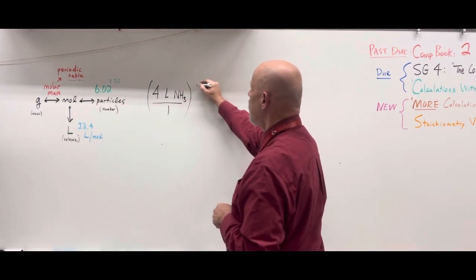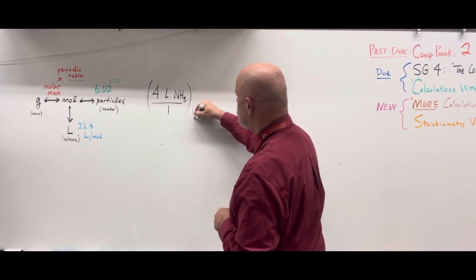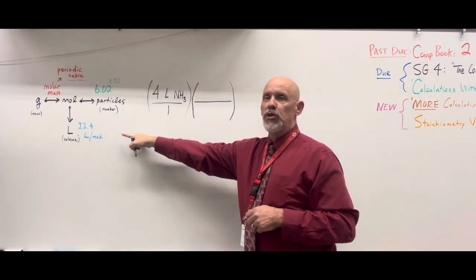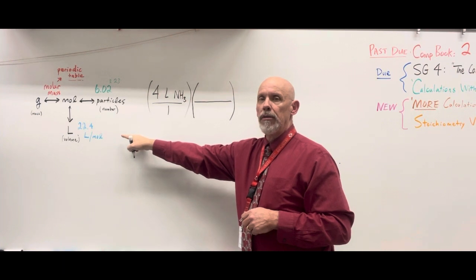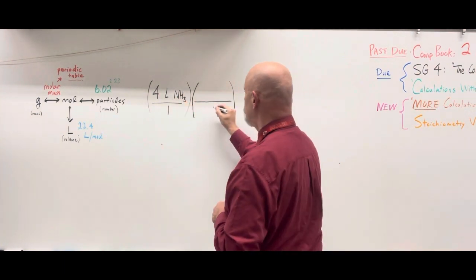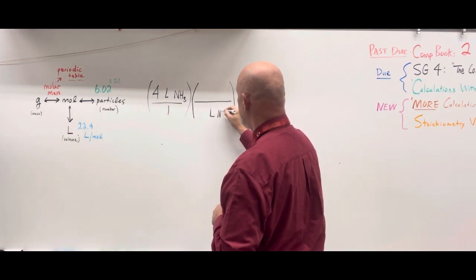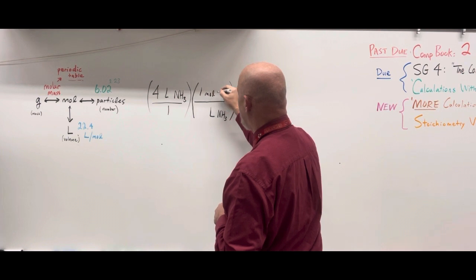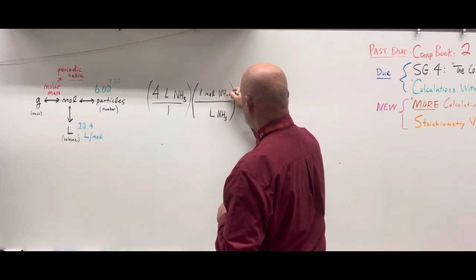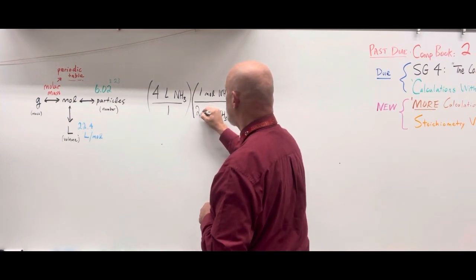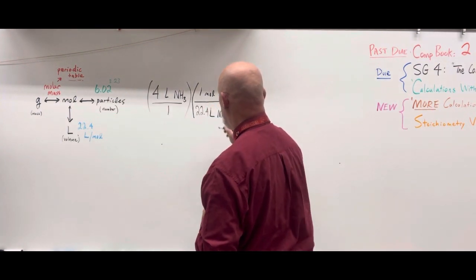If we're talking about a gas at standard temperature and pressure, STP, then that gas will occupy 22.4 liters per mole. Since we have liters of ammonia at the top of the first expression, we're going to end up canceling that. That's going to go on the bottom here and we'll put one mole of that gas on the top because one mole of an ideal gas will occupy 22.4 liters per mole. We'll put that 22.4 liters on the bottom.